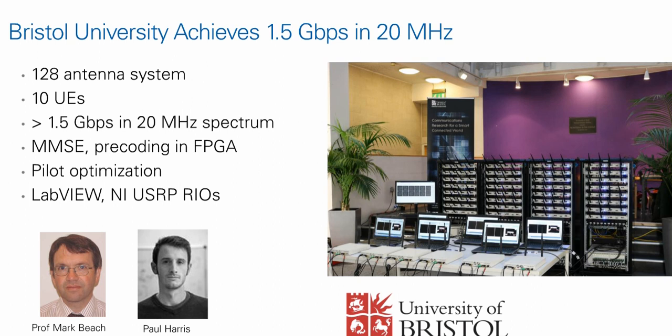This system uses a 20 MHz spectrum, very typical of LTE or even earlier 3G and 2G mobile communications. Within that bandwidth they were able to transmit 1.5 gigabits per second — orders of magnitude higher than LTE or previous systems. The 128 antennas are connected to 64 USRP RIO systems visible in the racks, and the laptops in front each connect to another USRP RIO acting as user equipment — essentially a mobile phone receiver.